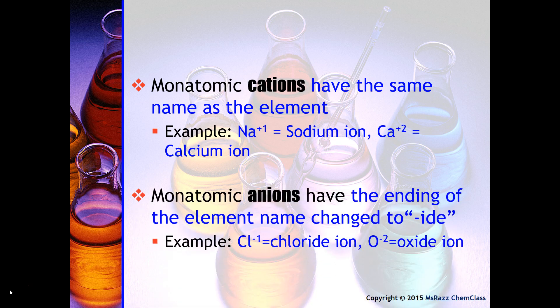Monatomic anions have the ending of the element name changed to -ide. So for example, if you see chloride, that's Cl with a minus one charge. If you see oxide, that's O with a minus two charge. Remember, anions indicate a gain of electrons, and this typically happens with non-metals.